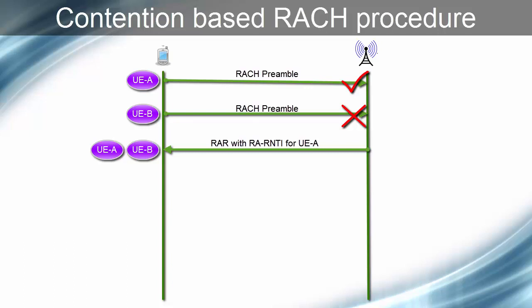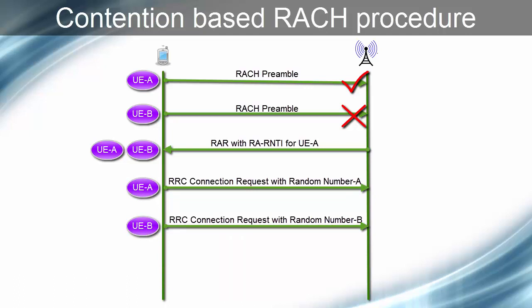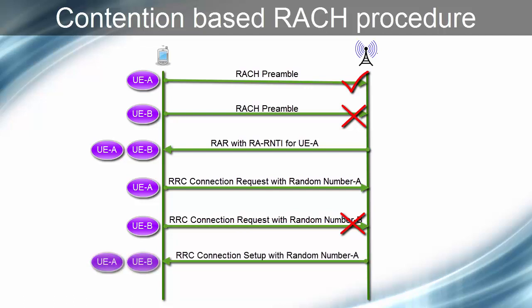Now, both UEs will choose some random number as initial identity and send the L3 message RRC connection request to eNodeB and start the timer T300. But eNodeB will not be able to decode the message from UE-B, as UE-B is using the timing advance value that was intended for UE-A. Now, eNodeB will send RRC connection setup in downlink for UE-A. Both UEs will decode this message as it is addressed by TC-RNTI. eNodeB will include the random number in this message that was sent by UE-A. Although both UEs will decode this message, the random number sent by and received by UE-B will mismatch. Only at this stage, UE-B will come to know that it has lost out to some other UE in contention resolution. Then UE-B will start the random access process again from the very beginning.